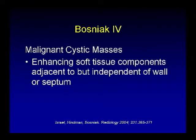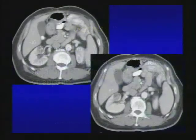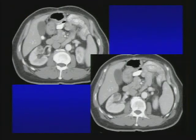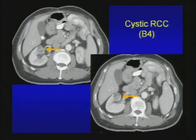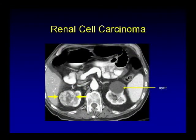Type 4 cysts are malignant cystic masses with enhancing soft tissue components adjacent to but independent of the wall or septum. Here's a case of a predominant cystic lesion with internal enhancing solid component — this is a cystic renal cell carcinoma, Bosniak type 4, needs surgical resection. And then you have the frankly solid enhancing mass, as in this example from the right kidney — renal cell carcinoma.